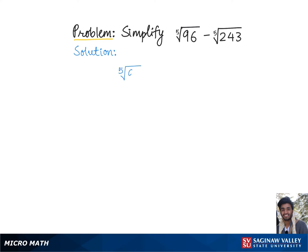To simplify 5th root of 96 minus 5th root of 243, we need to first rewrite these radicands as multiples of a number raised to the 5th power.